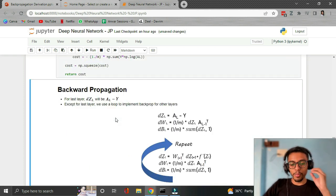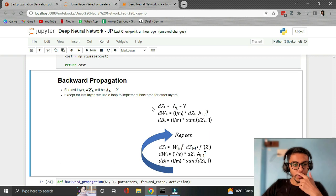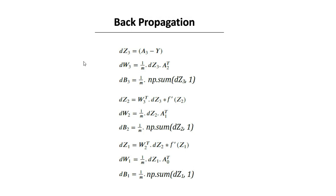Now the most difficult function — backward propagation. Let's do a quick recap. The pattern for DW and DB is: DW of any lth layer = (1/M) * np.dot(DZ_l, A_{l-1}.T), and DB_l = np.sum(DZ_l) of that layer. The pattern is clear: DZ of the same layer and A of the previous layer transposed.